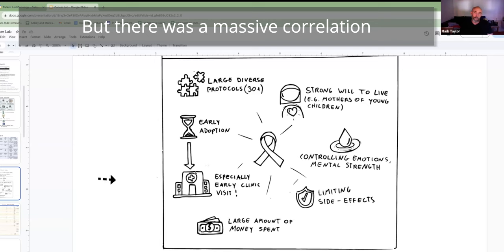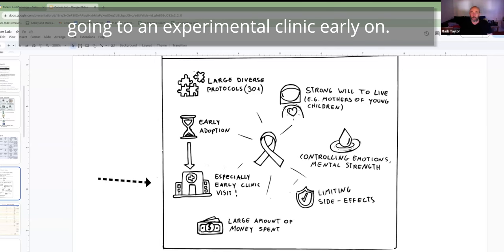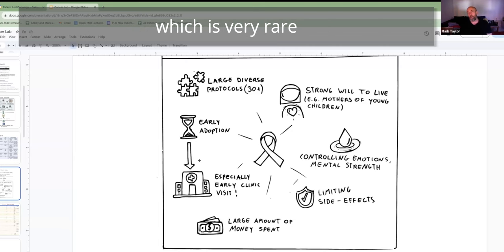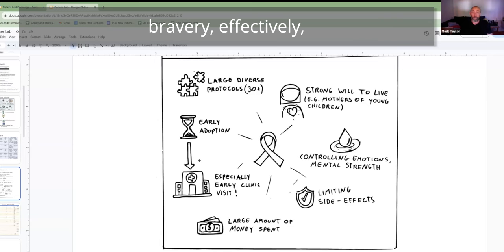There was a massive correlation with those going to an experimental clinic early on. We had four complete responses, which is very rare in pancreatic, for those that had bravery to go and fly from their country to a top clinic. Places like Kleef, which is shut down - he spent his life studying immunotherapy - Veritas Clinic in Malaysia.